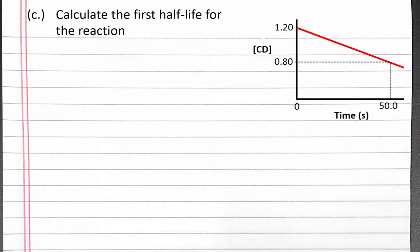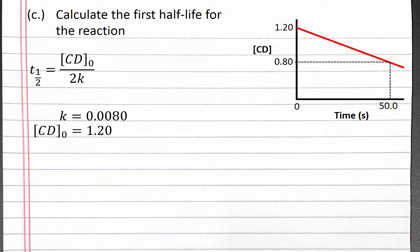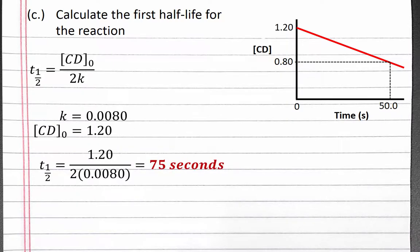Next we'll calculate the first half-life for the reaction. The half-life for a zero-order reaction is equal to the initial concentration of CD divided by 2 times the rate constant K. Our rate constant is 0.0080 and the initial concentration of CD is 1.2. Plugging these numbers into our half-life equation, we get 75 seconds for the first half-life.